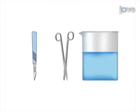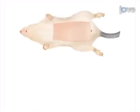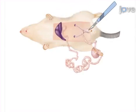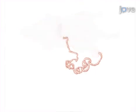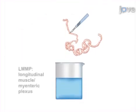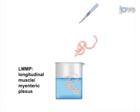The second step is to prepare solutions and surgical area for myenteric plexus isolation. Next, remove the gastrointestinal tract and isolate the desired section to create longitudinal muscle myenteric plexus preparation.